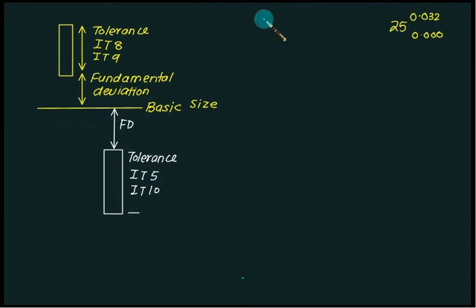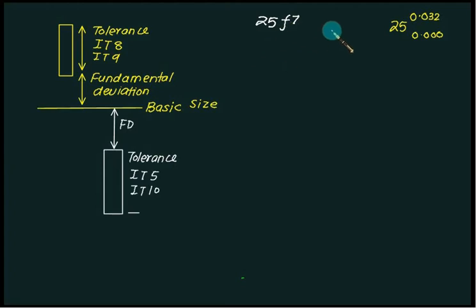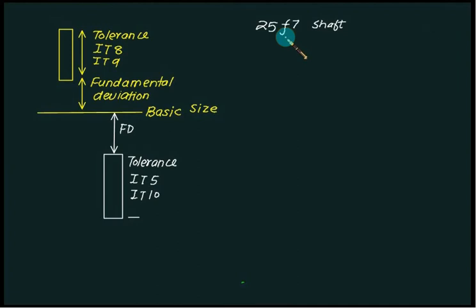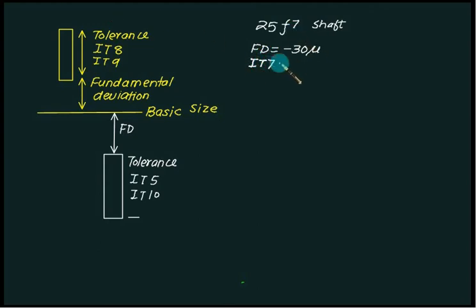Let's explain how to use the fundamental deviation with a simple example. Consider 25 F7 — a shaft with fundamental deviation F and IT grade equal to 7. The basic size is 25. The fundamental deviation is F, and F comes below H, which means it has a negative value. So let's say the fundamental deviation is minus 30 microns, and IT7 is equal to 30 microns.